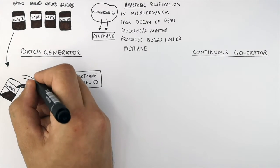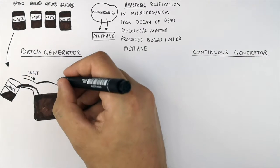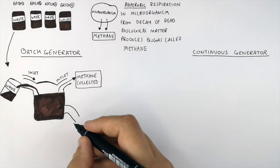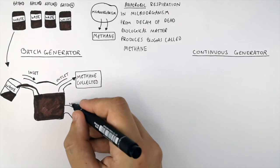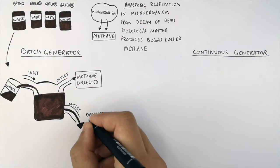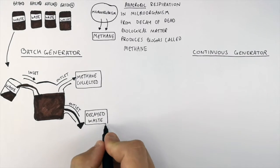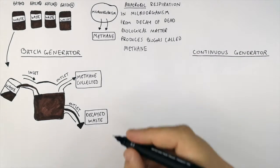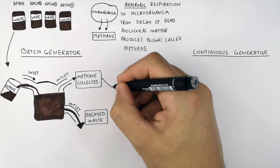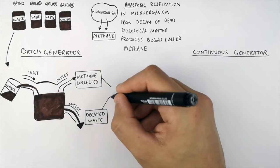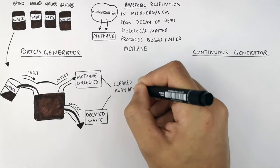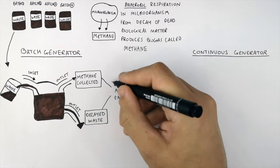So waste is put into the inlet pipe, and there are two outlet pipes, one for the methane that is collected, and one for the decayed biological matter that is no longer needed. Because this is a batch generator, and waste is put into the generator in batches, the decayed waste is cleared away after each batch. And so is the methane.